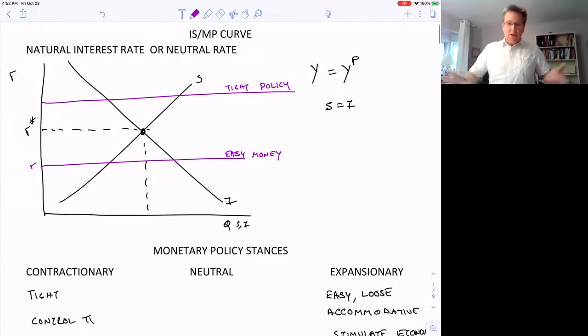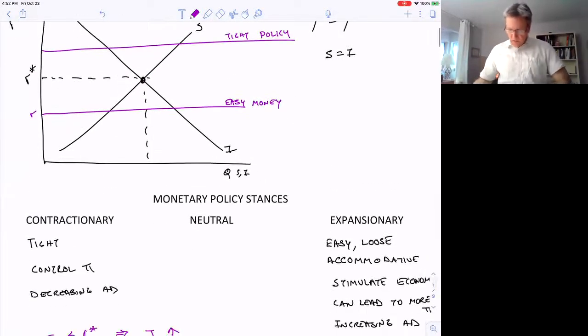A neutral stance where they're not trying to do either one would be setting the interest rate right equal to R star. What it would be without the Fed intervening.